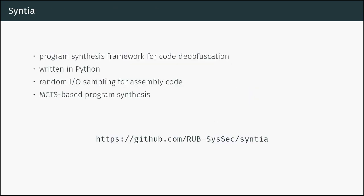We implemented this in our framework called Cynthia — a program synthesis framework for code deobfuscation. It is written in Python, performs random IO sampling based on Unicorn, and applies MCTS-based program synthesis. We open-sourced it under GPL version 2 and added all our samples. Check it out.